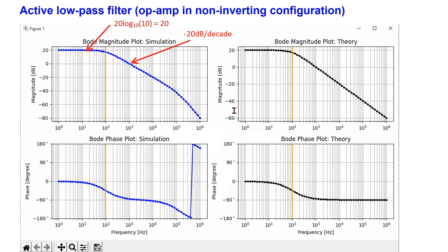When we run the code, we obtain the frequency response of the filter. Looking at the magnitude Bode plot, the filter provides a gain of 10 in linear, which is 20 dB at low frequencies. The break frequency is 100 Hz, marked on the plots, and the filter provides an attenuation of minus 20 dB per decade at higher frequencies. At extremely high frequencies, the simulation result differs slightly from theory due to op-amp frequency limitations.